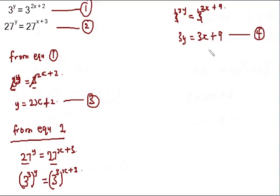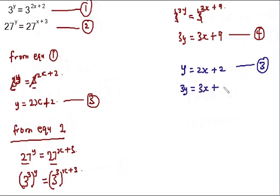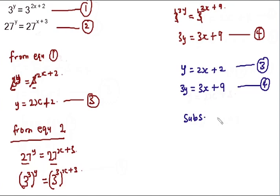Now that we have equation three and equation four, let's bring them together. Equation three gives us y = 2x + 2, and equation four gives us 3y = 3x + 9. To solve this system I'll use the substitution method. Equation three is already in the subject of formula, so I'll substitute equation three into equation four.